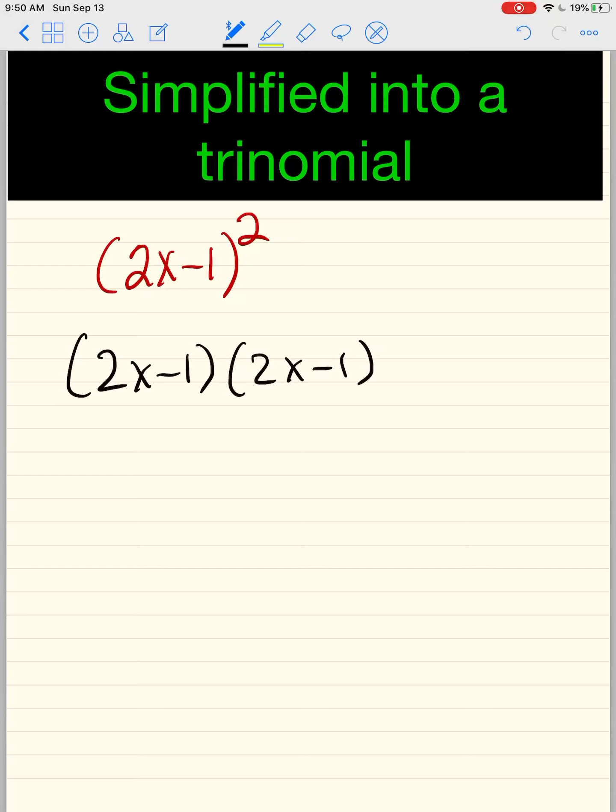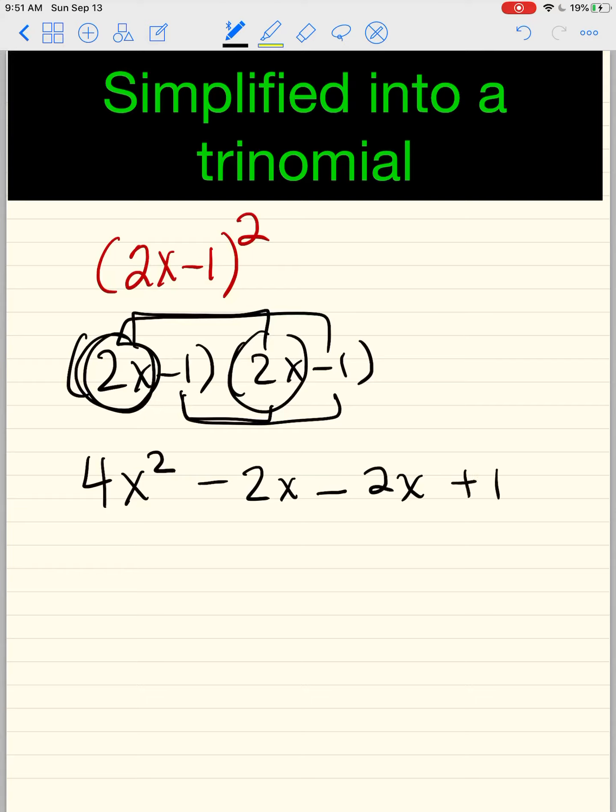You guys think we can foil this? 2x times 2x, right? First, you get a 4x². 2x times -1 is -2x. -1 times 2x is -2x. And -1 times -1 is positive 1. So 4x², these two go together and then plus 1. And that's your trinomial. That's another word for it. It's trinomial. There's three of them.